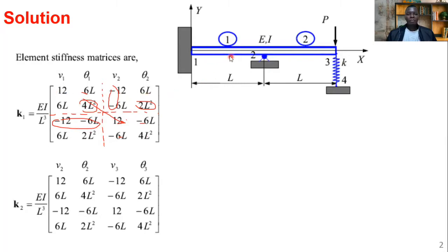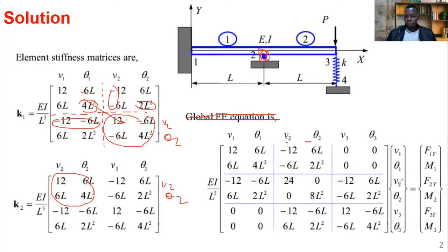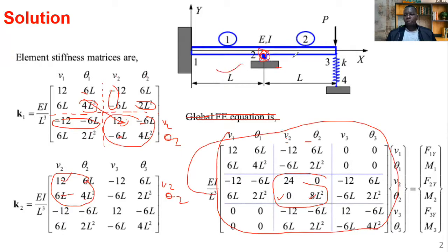Imposing the beam elements K1 and K2 via superposition, we look at the common node. The compatibility condition tells us that node two is shared and the nodes remain connected, so summation occurs at node two. Where you have v2, theta2 shared, the components are added: 12 plus 12 equals 24; minus 6L plus 6L equals zero; 4L squared plus 4L squared from each element are combined. You are effectively overlapping the two matrices to obtain the combined beam stiffness matrix.